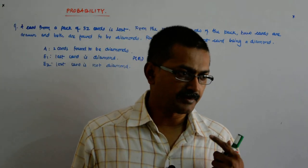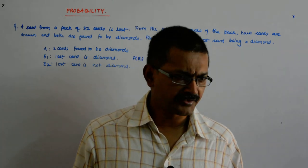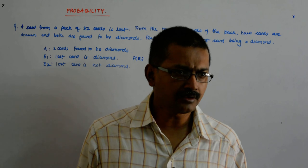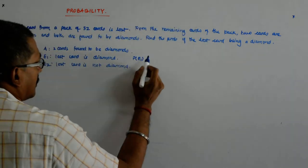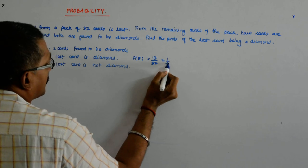The probability of a diamond getting lost is what? Any 13 out of the 52 can get lost, so 13 upon 52 is equal to 1 upon 4.